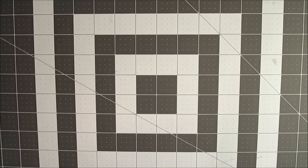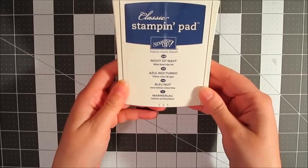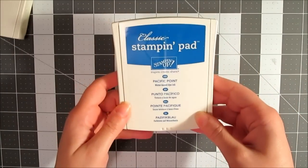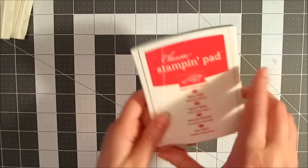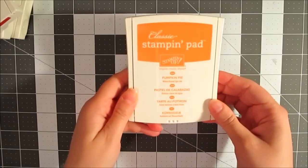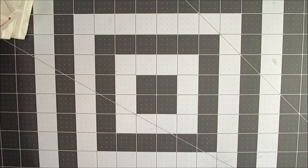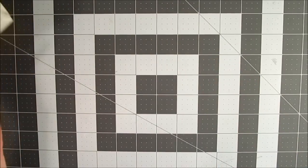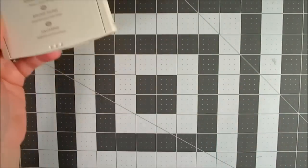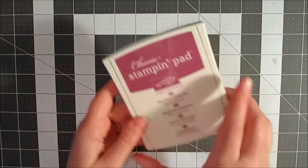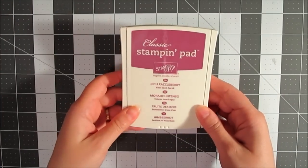He bought me 14 different color ink pads and I'm going to show you what they are. I got Night of Navy, Pacific Point, Real Red, Pumpkin Pie - some of these sound like a grocery list almost - Elegant Eggplant, Crumb Cake, Old Olive, Rich Razzleberry. I don't know what a Razzleberry is but yum.